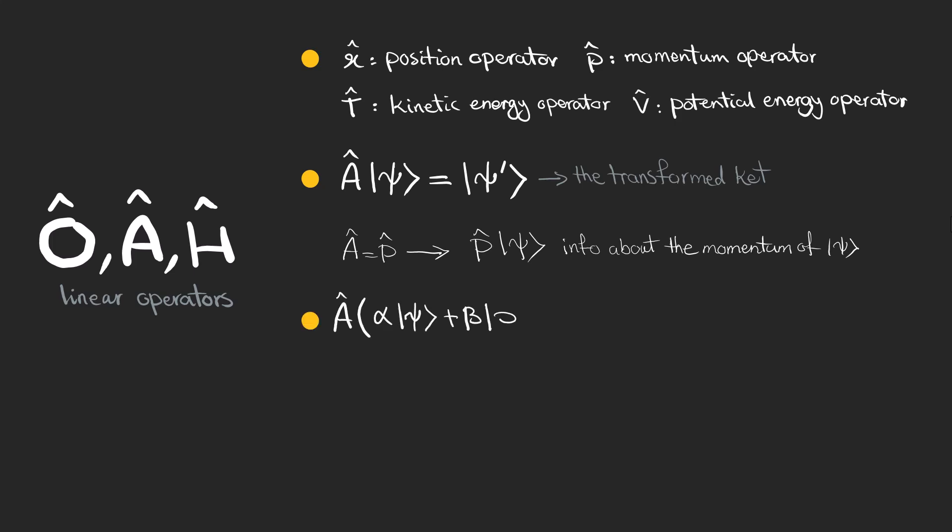One of the key properties of linear operators is that they obey the principle of linearity, meaning that for any states psi and phi, and for any complex numbers alpha and beta, a linear operator satisfies this equation.